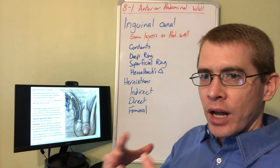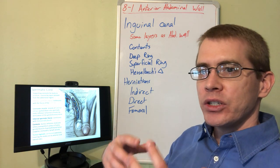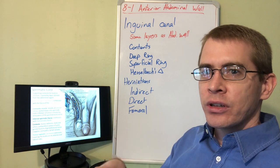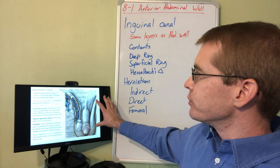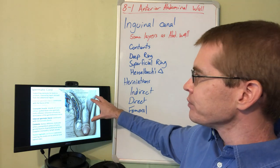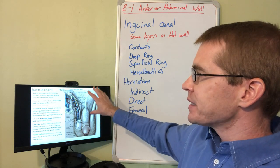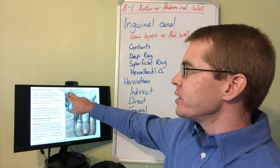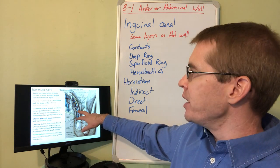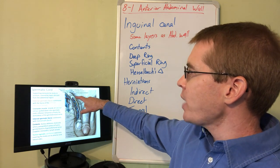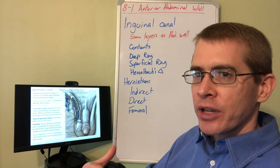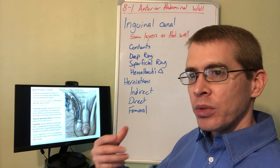We'll be talking primarily about male anatomy first because it's much more complex, and then we'll discuss female anatomy shortly. Here we can see all the different structures that make up the spermatic cord in the male. First, there is the external spermatic fascia, which is derived from the external abdominal oblique muscle.